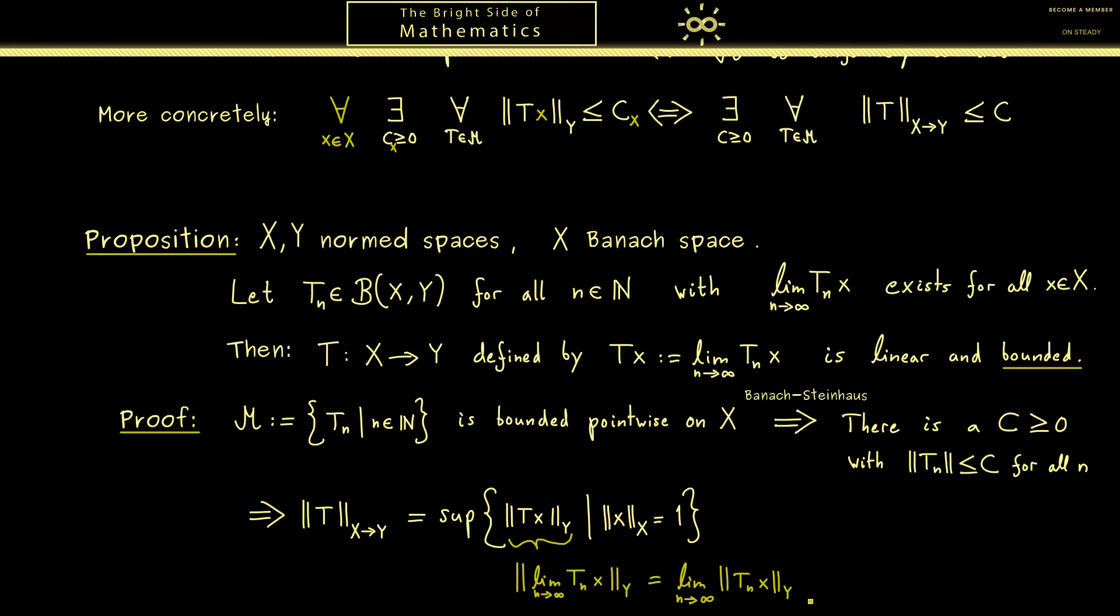At this point we can use that the operator norm is bounded by c so we know this whole norm is also bounded by c. x has norm 1 so we don't need that and we also don't need the limit here. And there we have our result. The operator norm of T we don't know what the exact value is but we know it's less or equal than c. Hence the operator T is bounded.